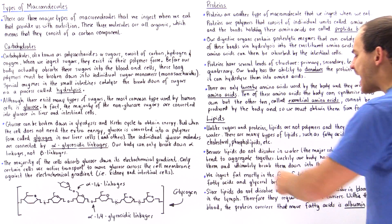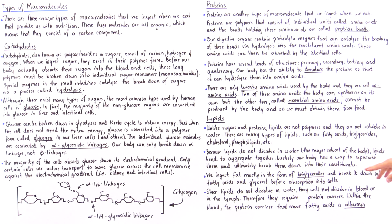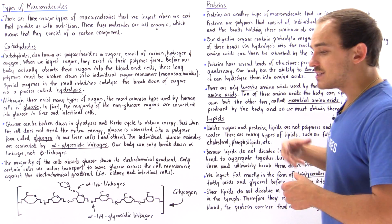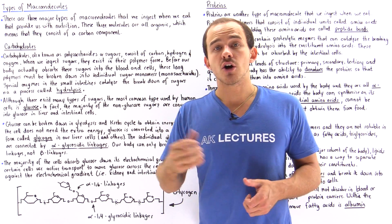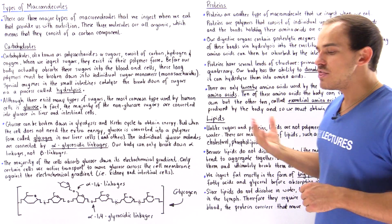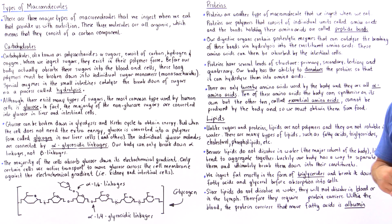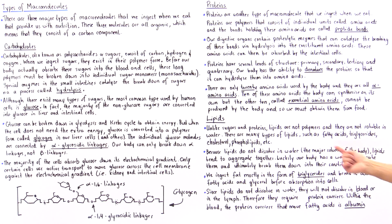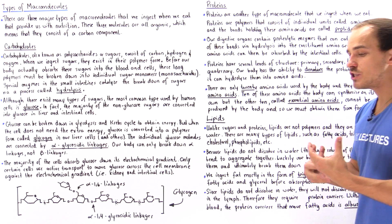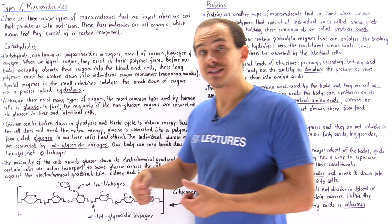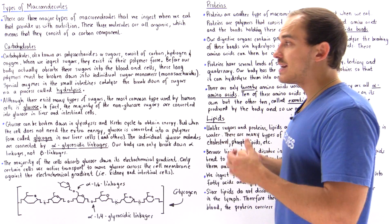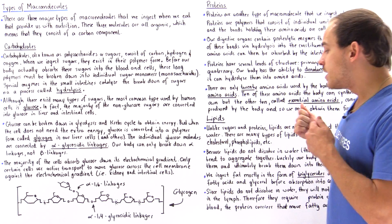We ingest fat mostly in the form of triglycerides. Triglycerides consist of three fatty acids — long, non-polar carbon chain tails — plus a glycerol component. Because we ingest most fat as triglycerides, before triglycerides are actually absorbed by cells we have to break them down into fatty acids and glycerol, and only then can our cells absorb those products.